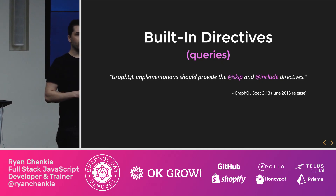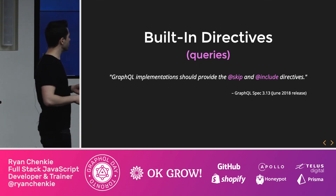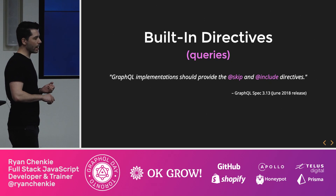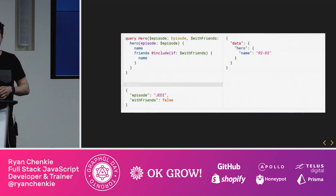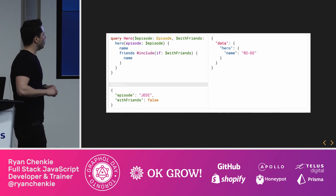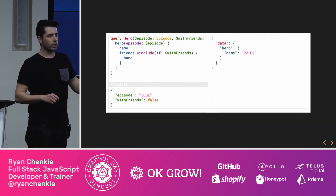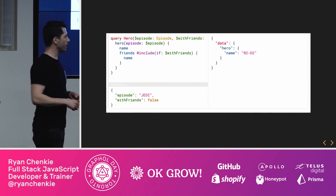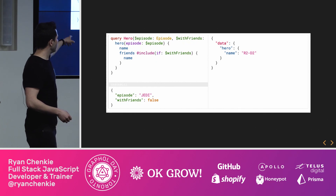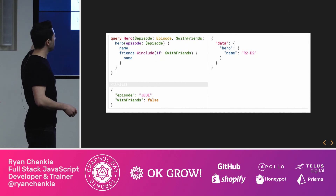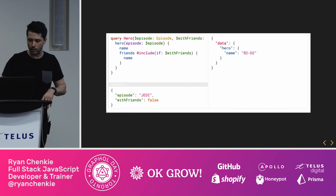From the spec, we get clues as to what these look like. There's very minimal advice on directives within the spec. There are two that it says queries should have: skip and include. If you use the include directive, you can have some kind of Boolean condition. If you're making a query and that condition is false — for example, if 'with friends' is false on this query — it's not going to return the list of friends. If it were true, then that list would be included.